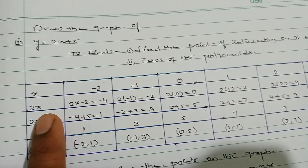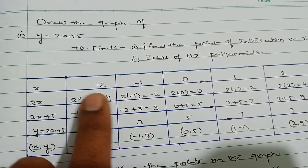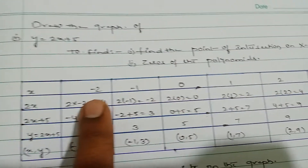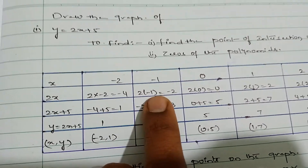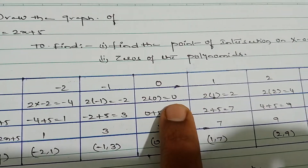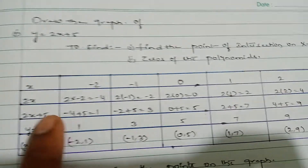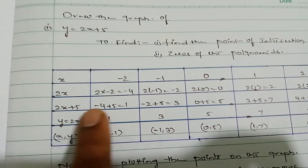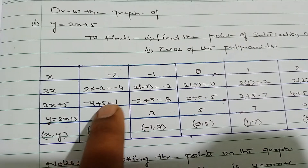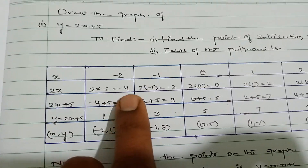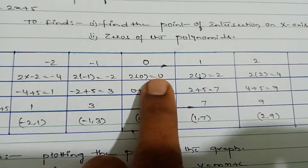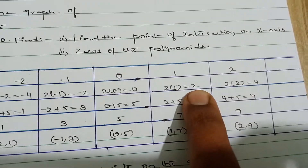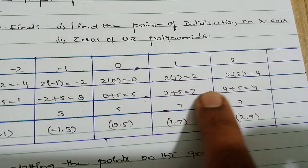Substitute x values into 2x: 2×(−2) = −4, 2×(−1) = −2, 2×0 = 0, 2×1 = 2, 2×2 = 4. Now for 2x + 5: −4 + 5 = 1, −2 + 5 = 3, 0 + 5 = 5, 2 + 5 = 7, 4 + 5 = 9.